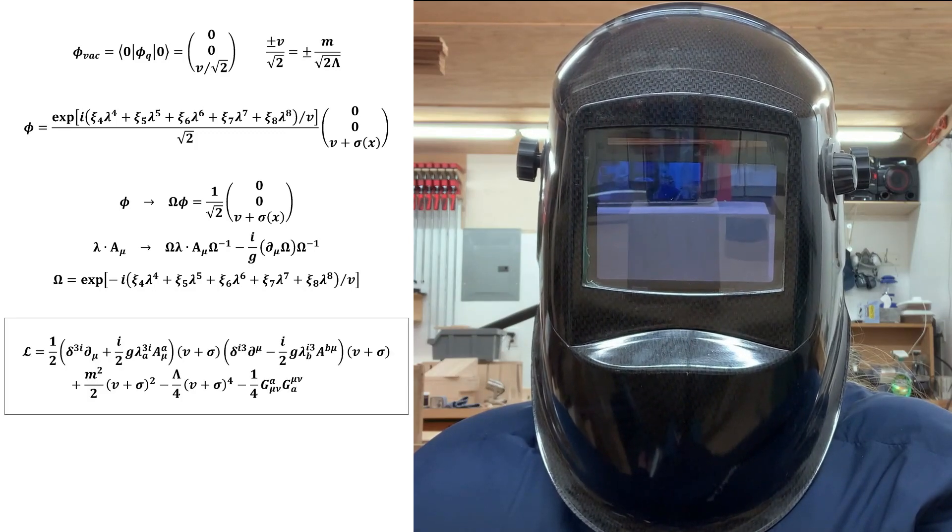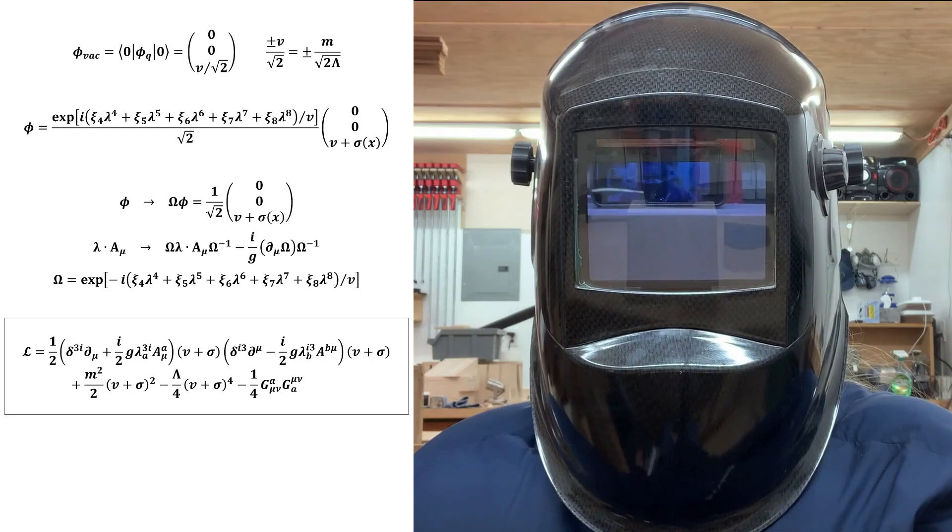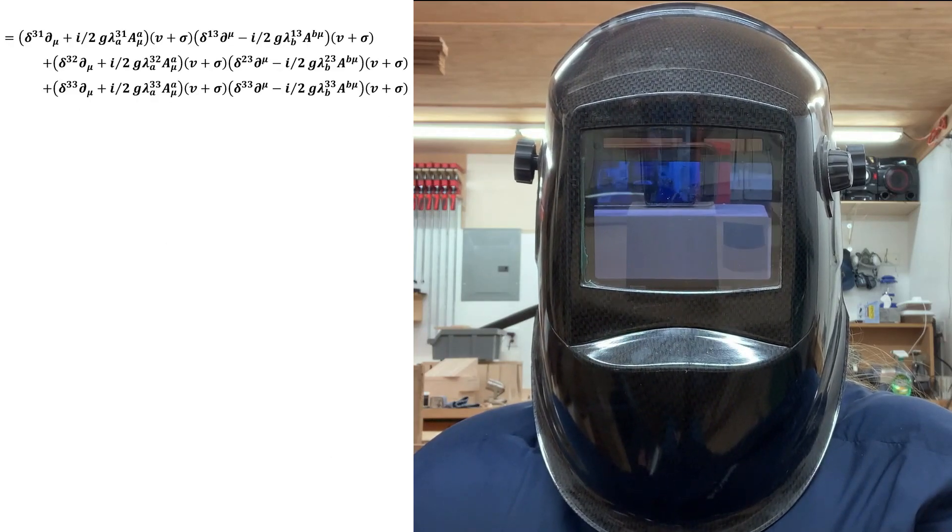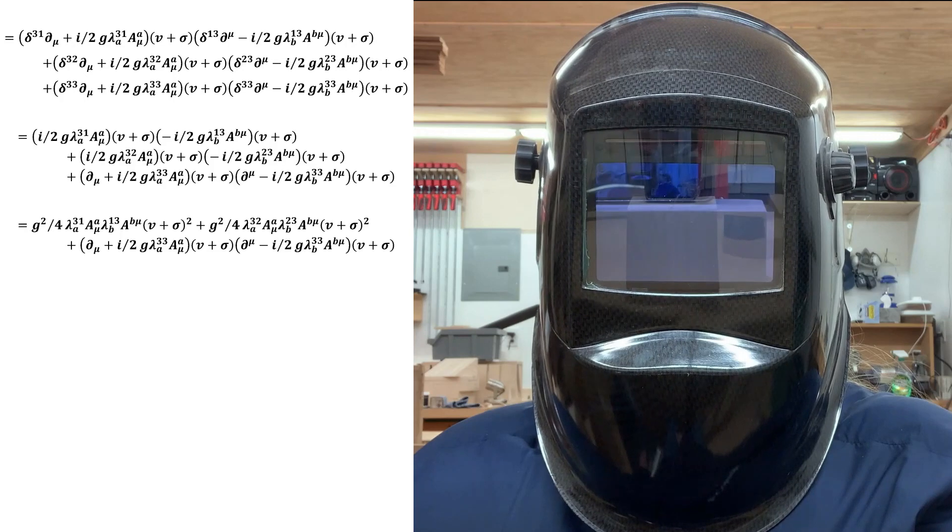From here, I'm going to start by computing the spontaneously broken derivative term. The first step is to expand out the i-index sum, and then simplify.